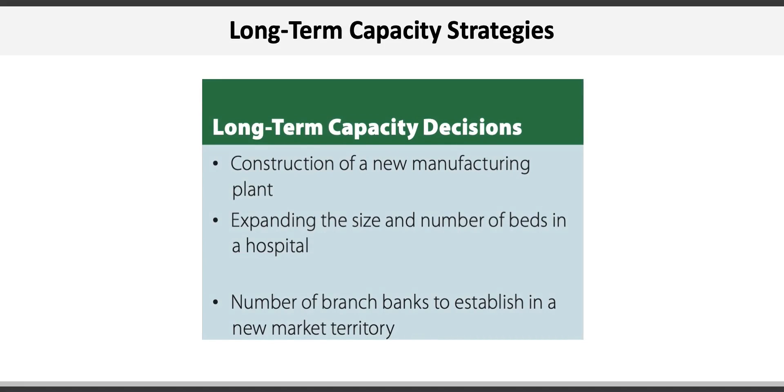Capacity is managed both in the long term and in the short term. From a long term perspective, we might consider decisions such as the construction of a new manufacturing plant, expanding the size and number of beds in a hospital, or the number of new bank branches to open a new market. Long term capacity decisions are typically expensive and difficult to change once made.